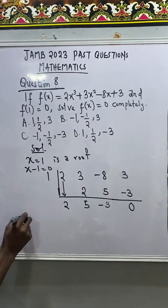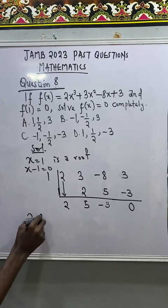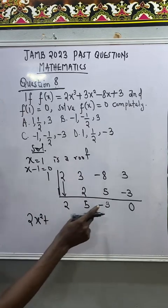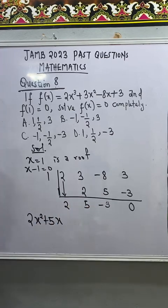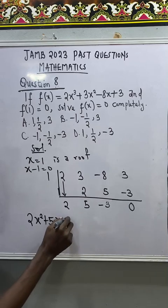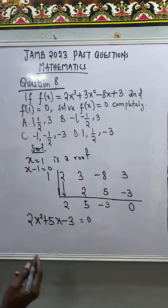So, I will now have this as 2x to the power of 2 plus 5x to the power of 1, then minus 3 all equal to 0.